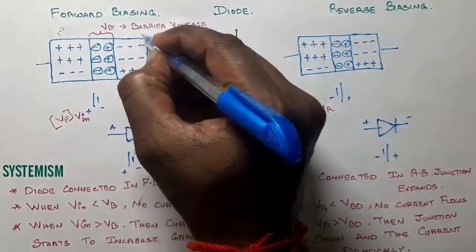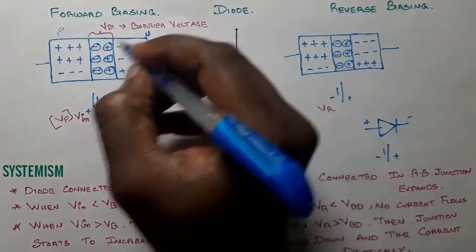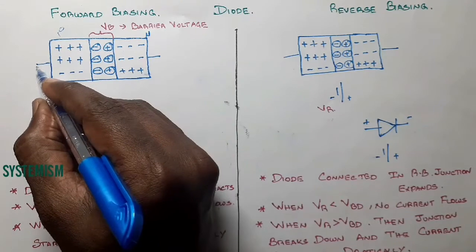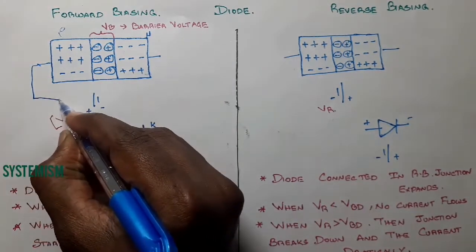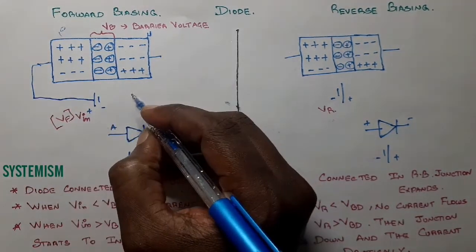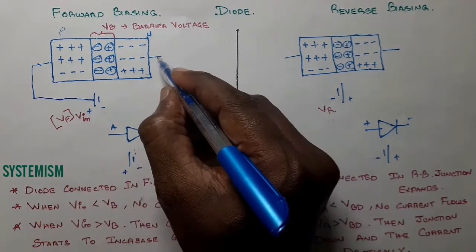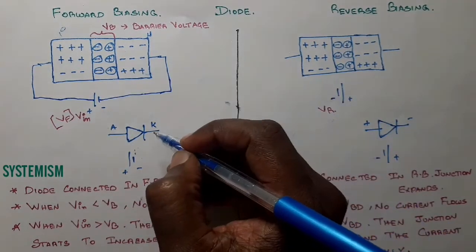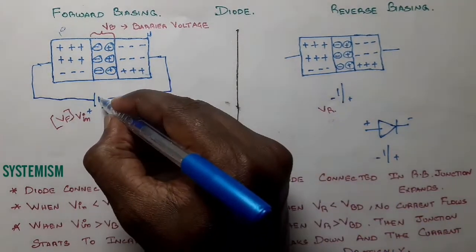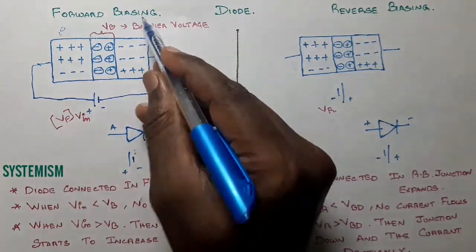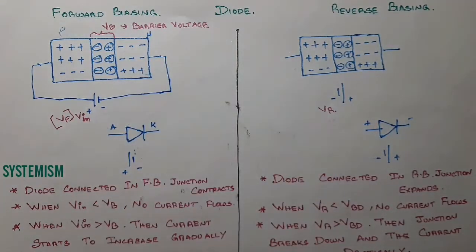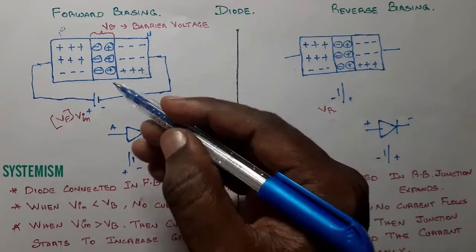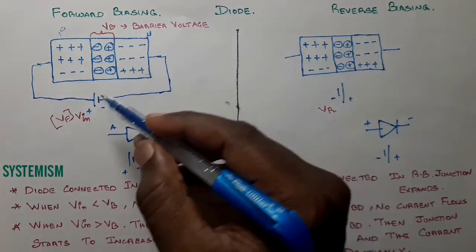What is forward biasing? Forward biasing means we have a P-type layer and an N-type layer. When you connect the P-type layer to the positive terminal of the battery and the N-type layer to the negative terminal of the battery, this process of connecting is called forward biasing.